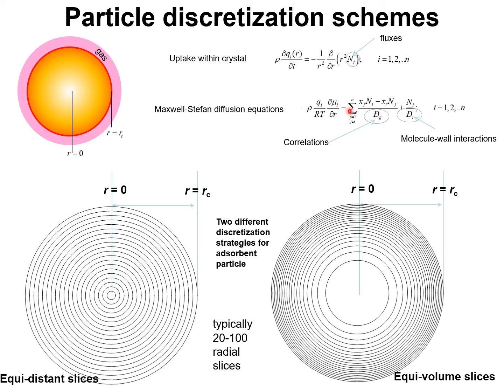The Maxwell-Stefan diffusion equations recognize two types of diffusibilities. D_i represents molecule-wall interactions and D_ij quantify the correlations in molecular jumps for the i-j pair in the adsorbed phase. For solving the set of partial differential equations, we may apply two different discretization strategies.